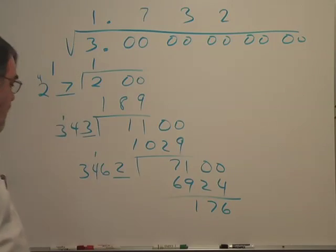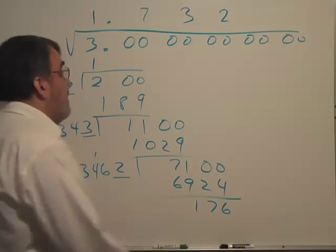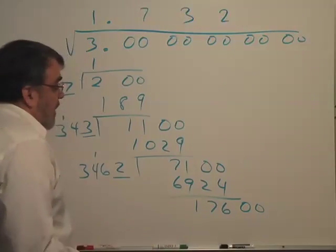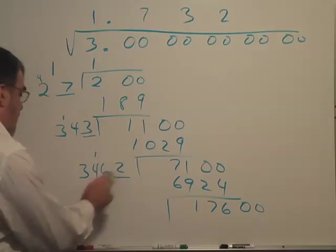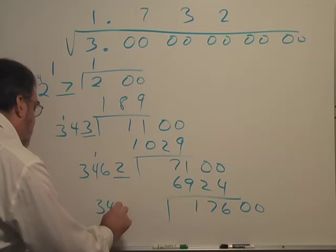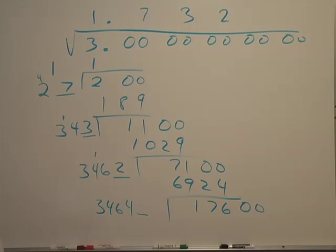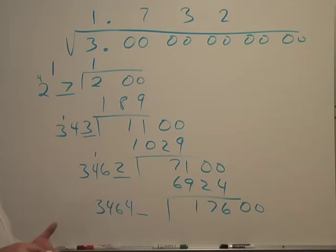I don't really have much room for another step, but you would bring down the zeros again. Double the last digit 3464 blank, and notice that this 3464 is 2 times 1732.